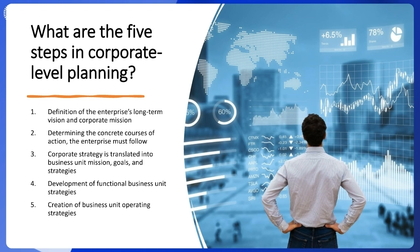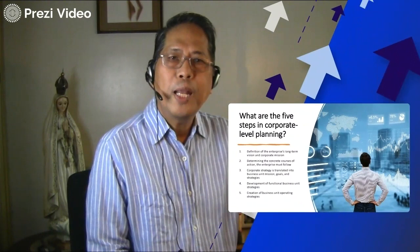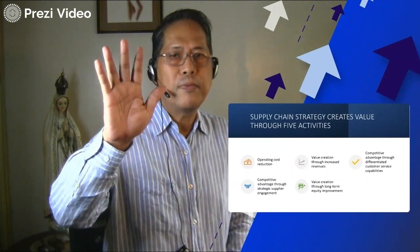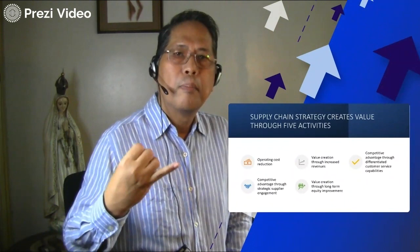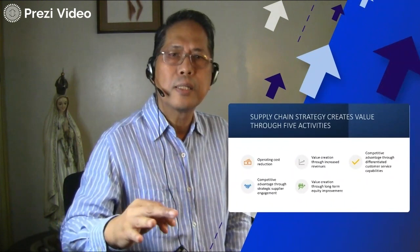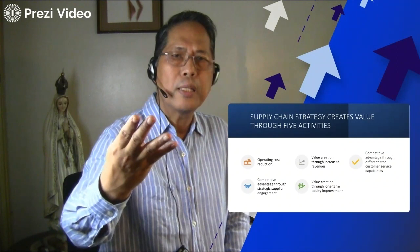Supply chain strategy is one of the five major functional strategies — such as marketing, sales, financial, human resources, and engineering design — of a business unit. Supply chain strategy creates value through five activities: operating cost reduction, value creation to increase revenues, competitive advantage through differentiated customer service capabilities, competitive advantage through strategic supplier engagement and value creation, and value creation through long-term equity environment.